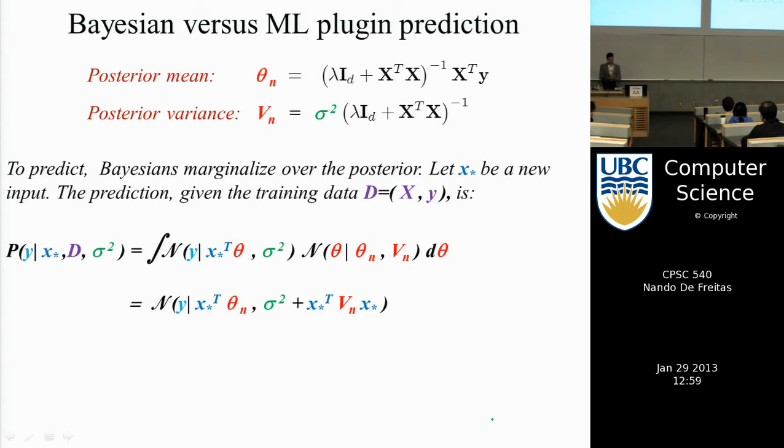If you want to make a prediction, in other words, given a new x, x star, I want to generate a prediction of what y should be, given my data, which includes all the training data, x, y's, then for Bayesians, the way to make a prediction is you take, is essentially you marginalize out the parameters, or if you will, for each possible value of theta, your prediction is weighted by the posterior. So it's a weighted prediction.